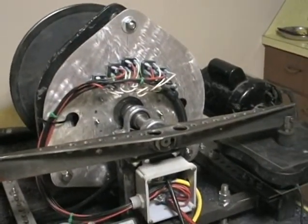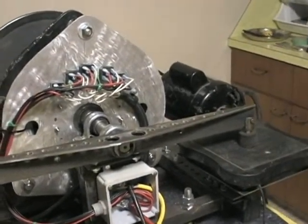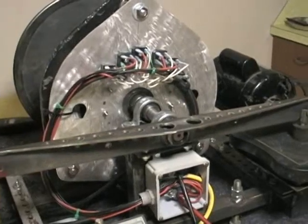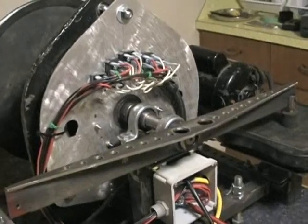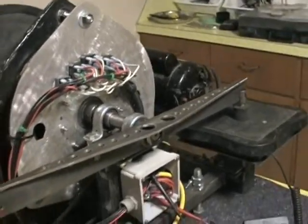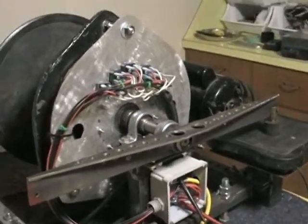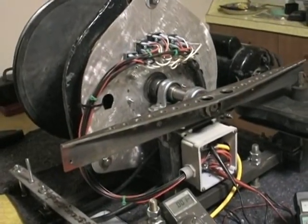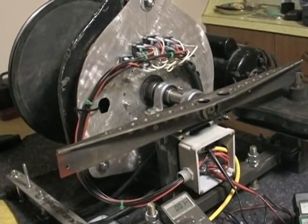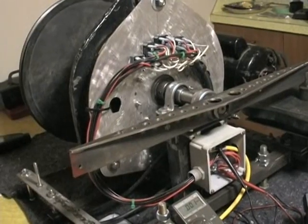We're going to see how the RPM drops and compare it to the force on the scale. By those two calculations, we're going to calculate the horsepower. Kilowatts: torque in foot-pounds times RPM divided by 9549. The same formula for horsepower is torque times foot-pounds times RPM divided by 5252.